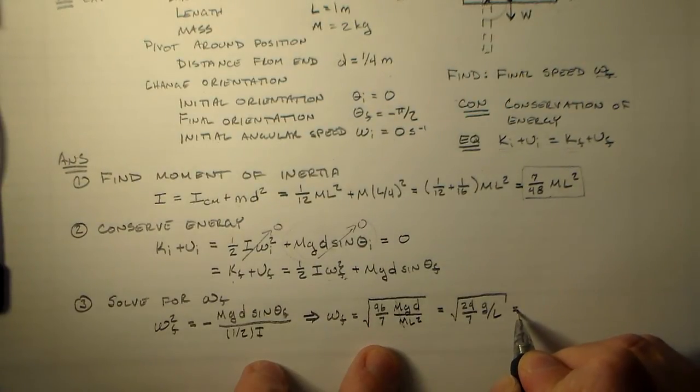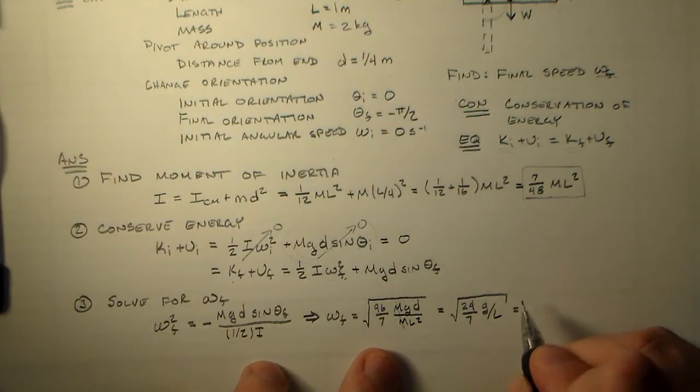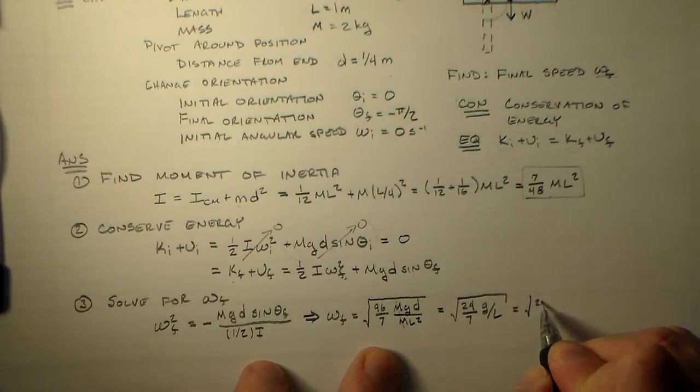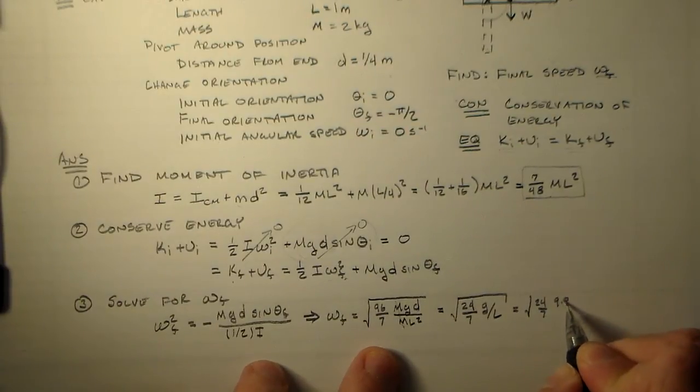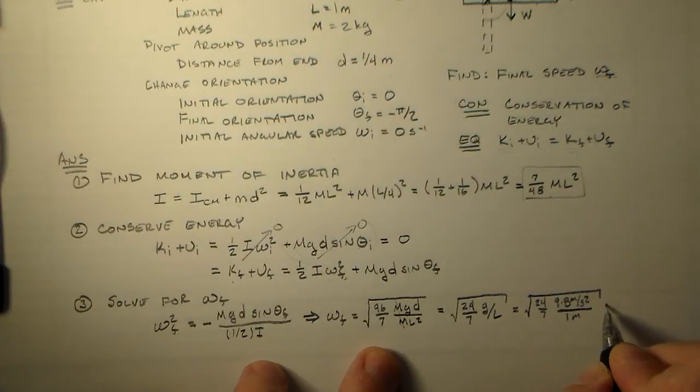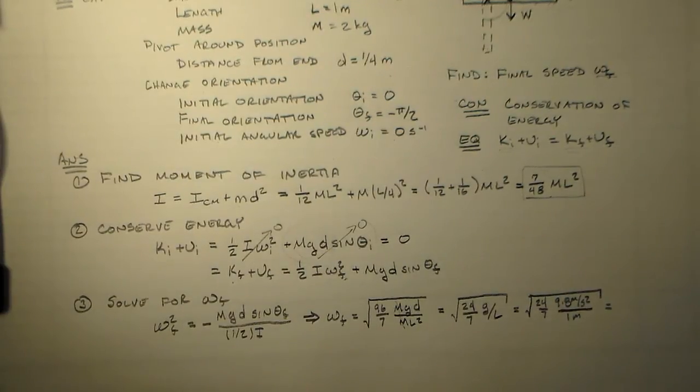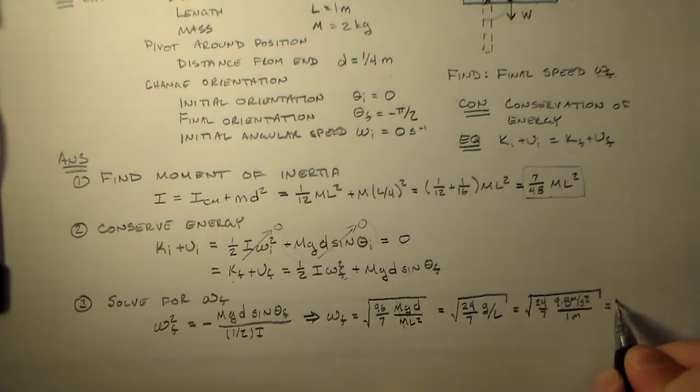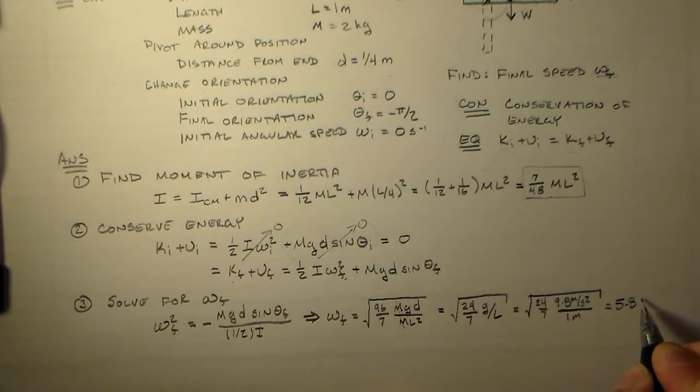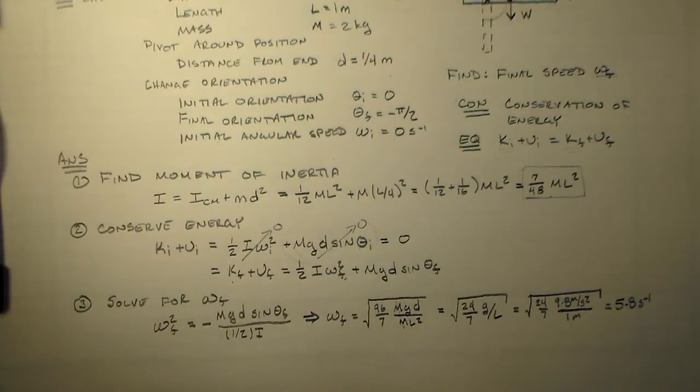That's 24/7ths times 9.8 meters per second squared over 1 meter, which equals 5.79567, or 5.8 seconds to the minus 1. That's the angular frequency.